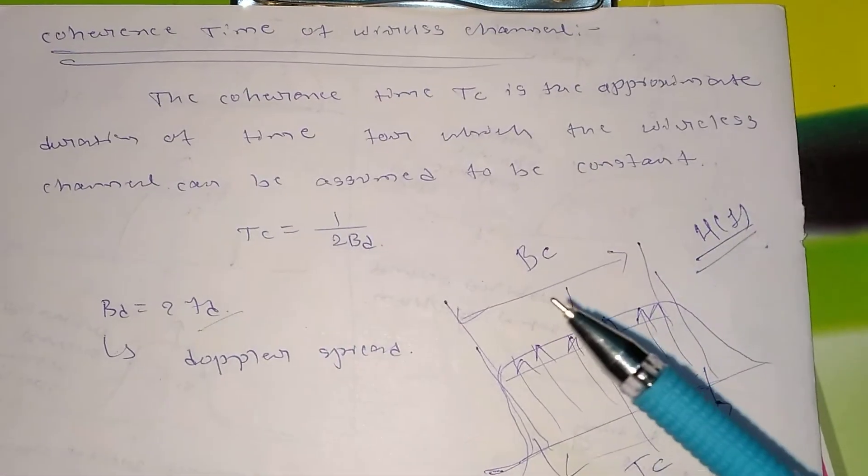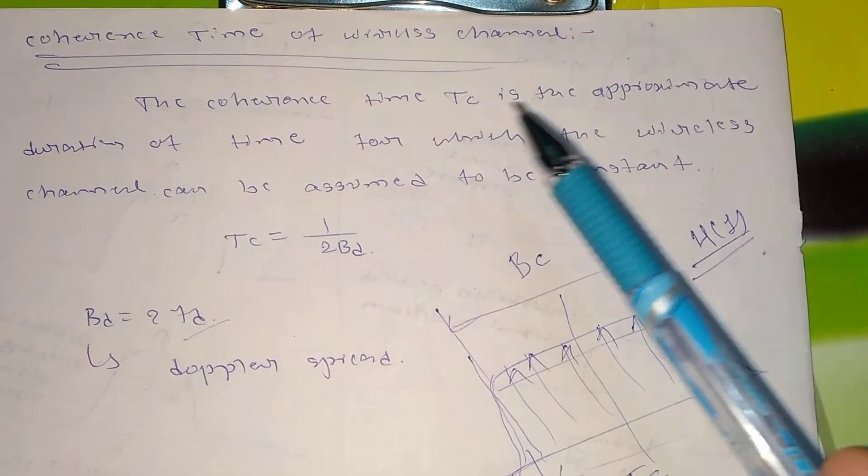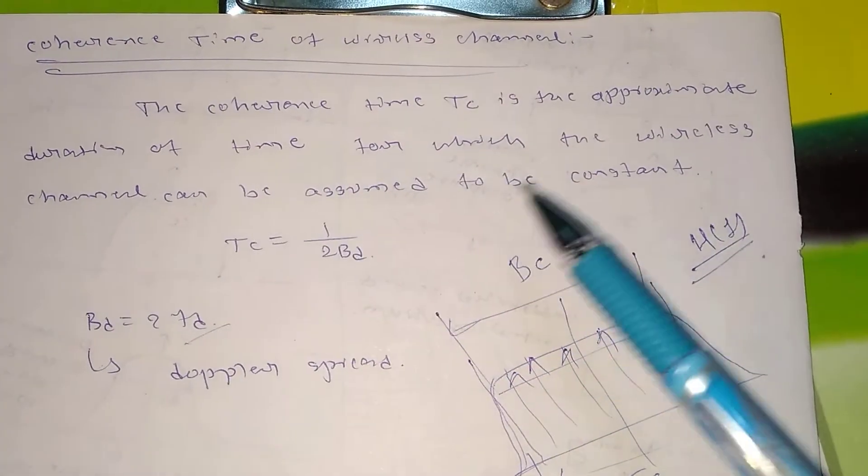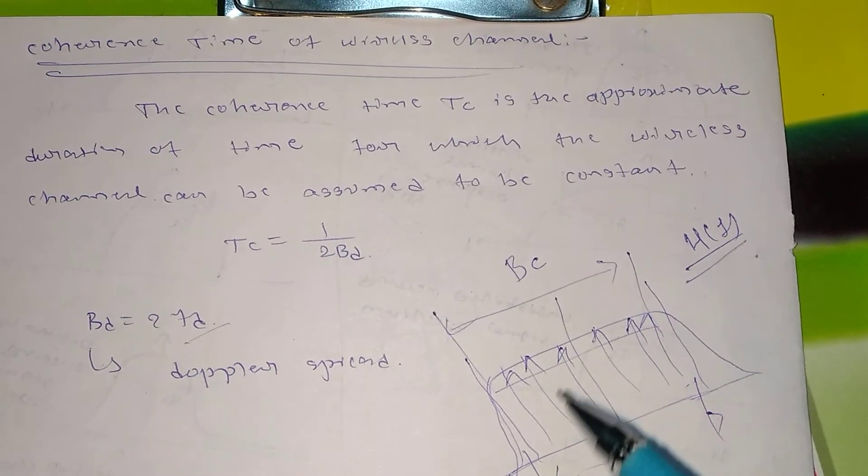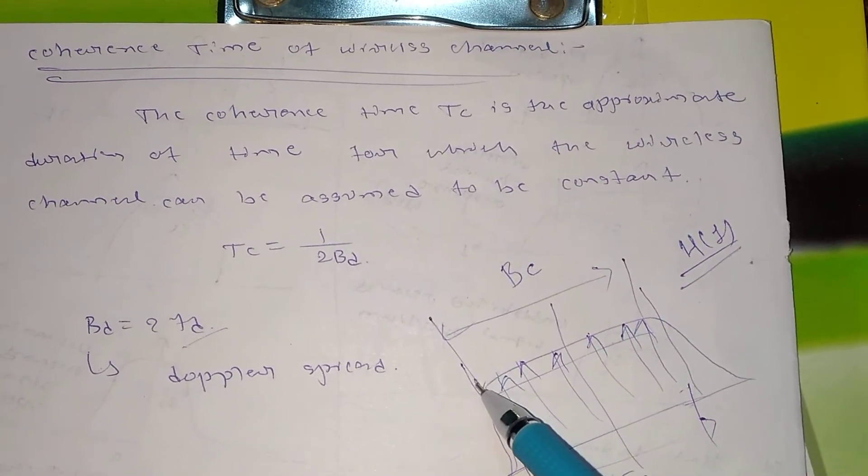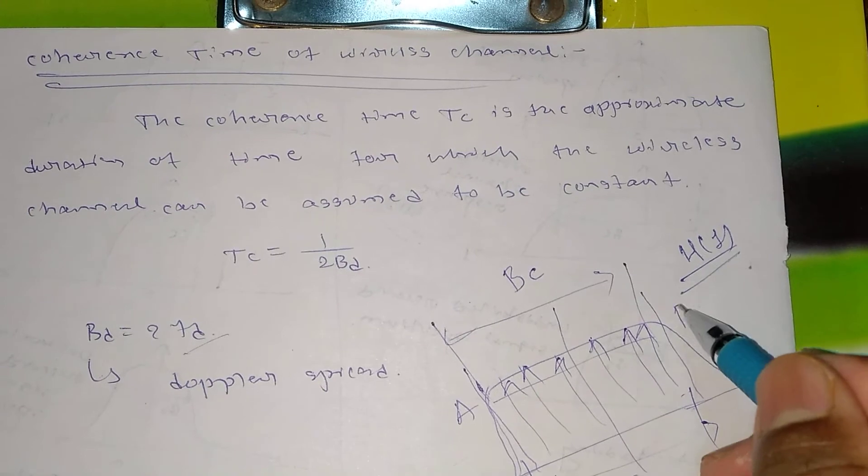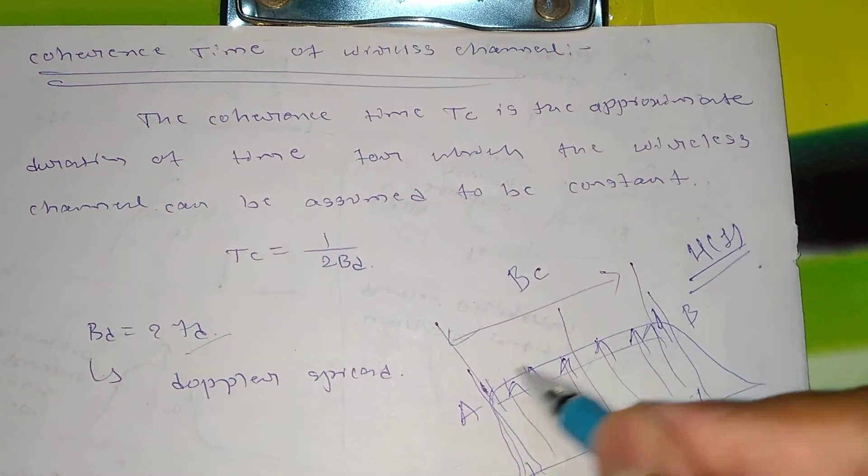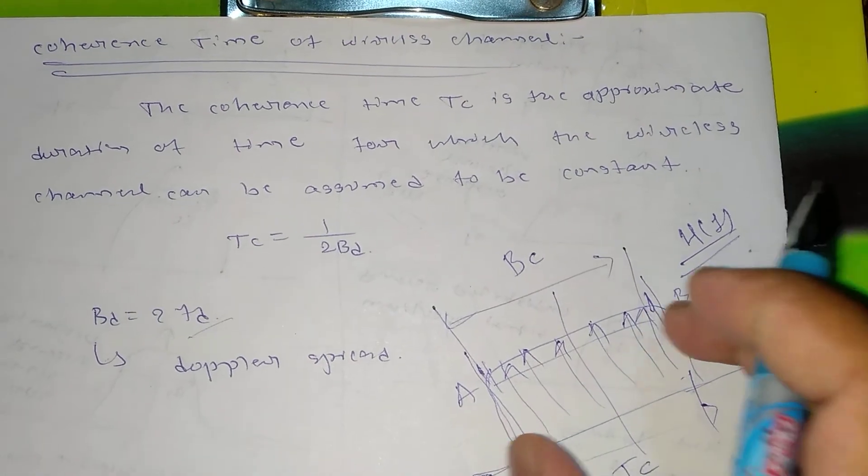So now you can clearly mark here, the coherence time Tc is the approximate duration of time for which the wireless channel can be assumed to be constant. So the wireless channel here is constant from this point, let us say from point A to point B. Its response is constant in between these two points.